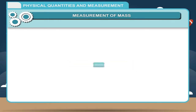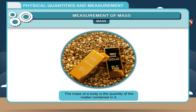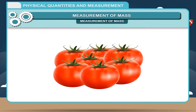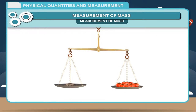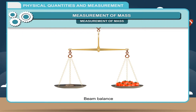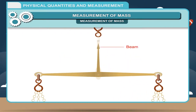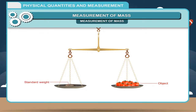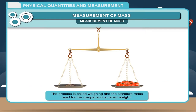Measurement of Mass: The mass of a body is the quantity of matter contained in it. When we purchase tomatoes from the market, the vendor measures the mass of tomatoes by a balance. The beam balance is used to measure mass. It has a long beam with a support at the center and two identical pans suspended at equal distances from the center. The object to be weighed is placed on one pan and standard weights are placed on the other until both pans are perfectly balanced. The total of the standard weights gives the mass of the object. This process is called weighing.